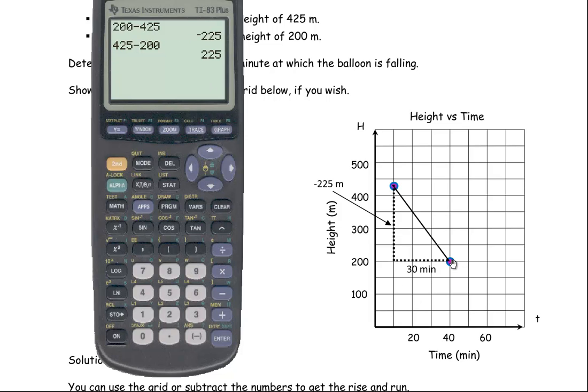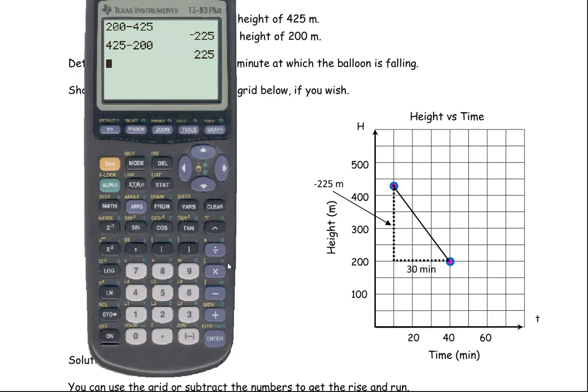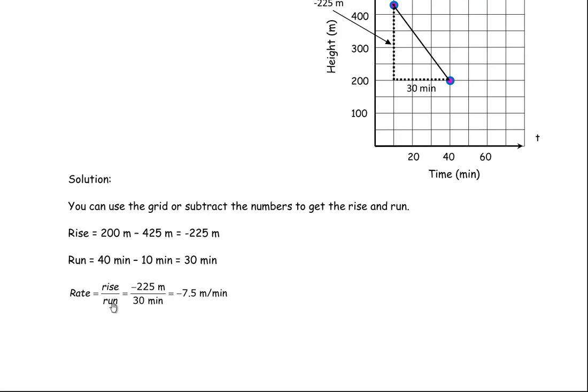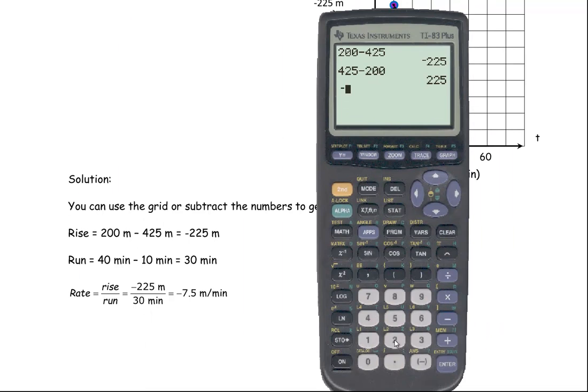Now from 10 minutes to 40 minutes, that is 30 minutes, so the run is 30. This negative 225 is the rise, the 30 minutes is the run. This is what the rate calculation looks like. Rate is rise over run, so the rise is negative 225, and the run is the 30 minutes. If we take negative 225 divided by the 30 minutes, we get negative 7.5. The units would be meters per minute, because this is a meter amount on top and the time is minutes in the bottom, so it is meters per minute.